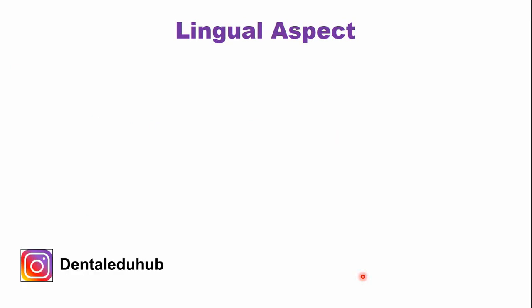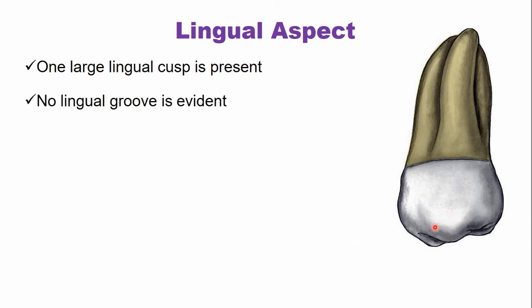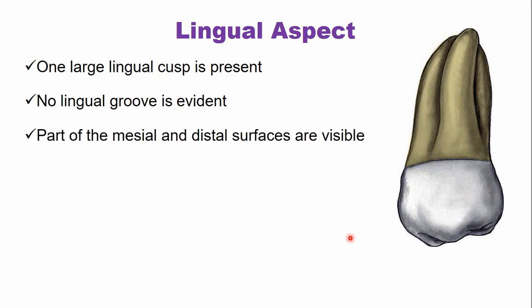From the lingual aspect — sometimes referred to as the palatal aspect — only one large cusp is present, known as the lingual cusp. The lingual cusp surface is smooth with no developmental depressions, unlike the second molar which has a lingual groove between two cusps. There is no lingual groove or any other developmental depression on the lingual surface. The crown and root converge on the lingual side, so parts of both the mesial and distal surfaces are visible from the lingual aspect.